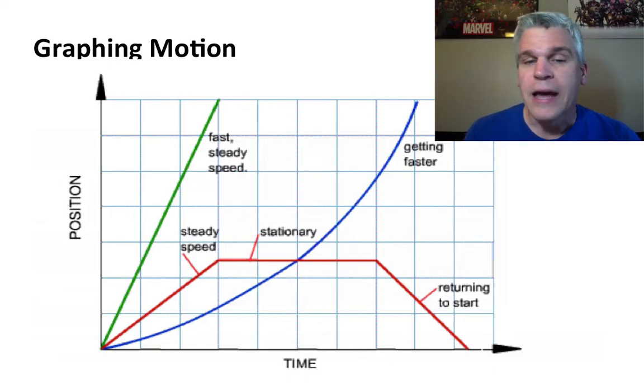But the blue line, however, the person starts out slower and then slowly gets faster, creating more of a curved line.